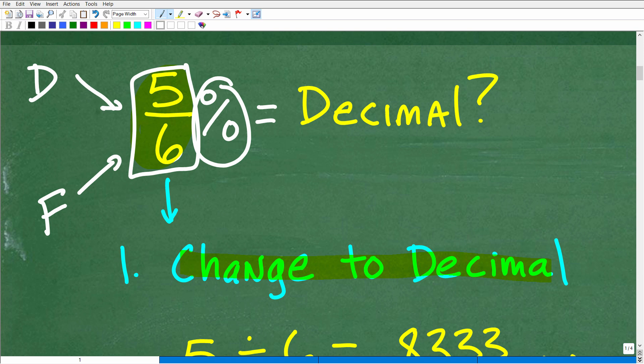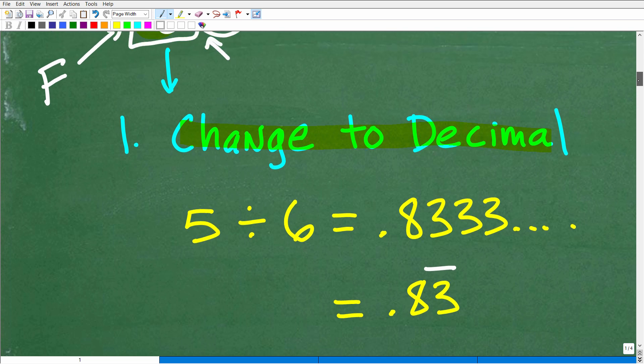All right, so how do you change a fraction into a decimal? Pretty straightforward. All we need to do is actually divide the numerator by the denominator. Here, this is 5-6, but this really means 5 divided by 6. So all we need to do is to go into our calculator and go 5 divided by 6. Hit the Enter key. Now, what are you going to get? You're going to get 0.83333. And all these 3's, this goes on to infinity.